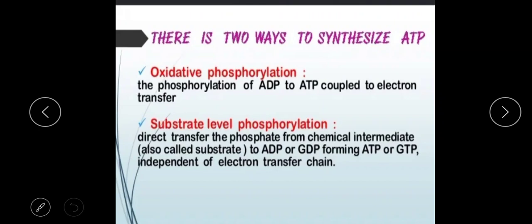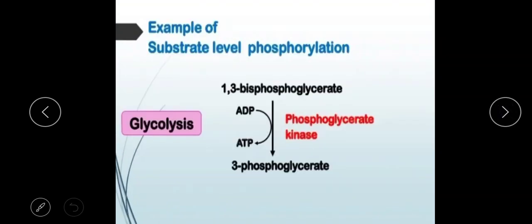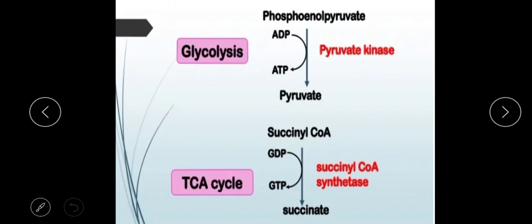Substrate-level phosphorylation involves chemical intermediates such as ADP or GDP being directly phosphorylated. An example is pyruvate kinase, an enzyme that converts phosphoenolpyruvate to pyruvate, and in doing so directly generates ATP from ADP.